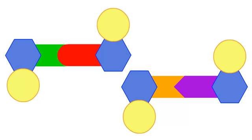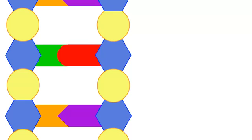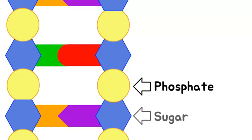DNA has a shape that can be compared to a ladder. The bases make up the rungs of the ladder, while the sides of the ladder are made up of repeating phosphates and sugars.